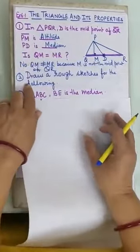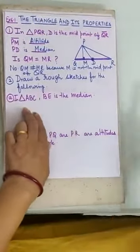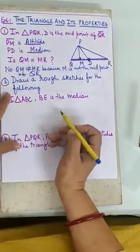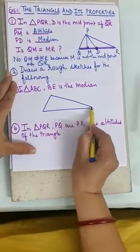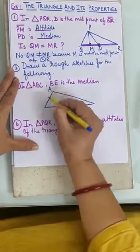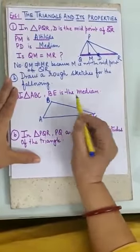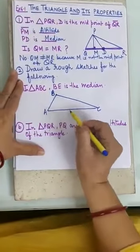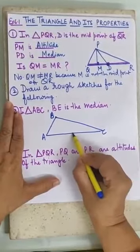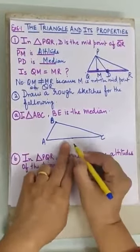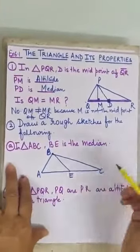Now coming to the next question: draw a rough sketch for the following. The very first statement - in triangle ABC, BE is the median. So let us first draw triangle ABC with vertices A, B, and C. From B, a median goes to the midpoint of the opposite side AC. Let us mark that midpoint as E and join BE. So BE is the median of triangle ABC.